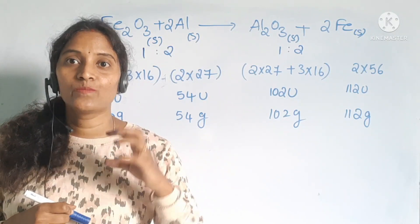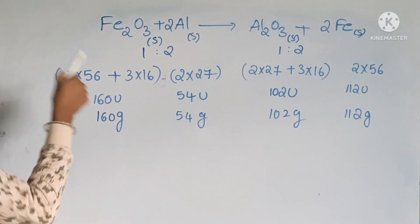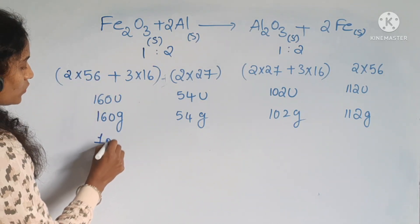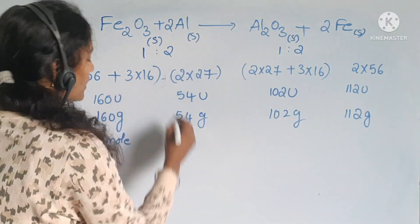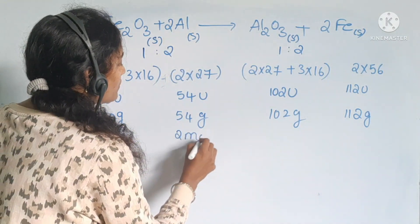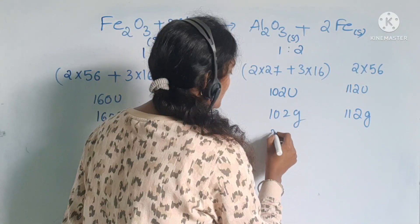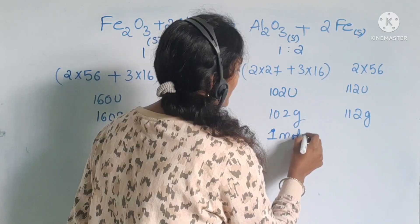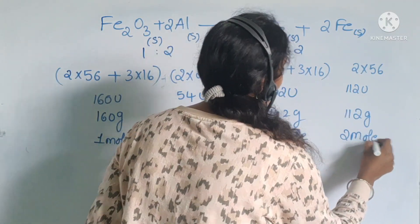If you are going to write gram molecular mass or gram atomic mass, then we can express their molar ratios. So here, 160 grams is equal to 1 mole of Fe2O3, 54 grams is equal to 2 moles of aluminum, 102 grams equal to 1 mole of Al2O3, 112 equals to 2 moles of iron students.